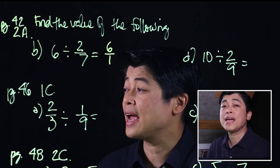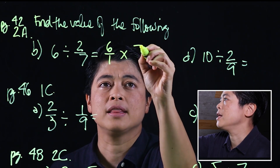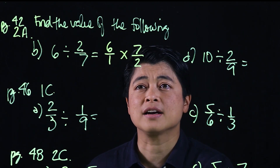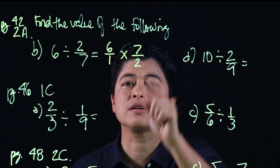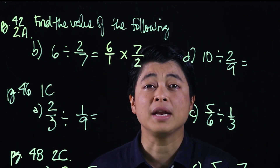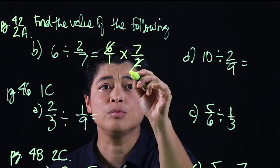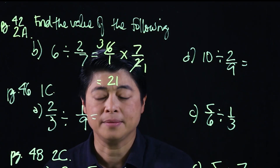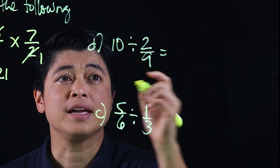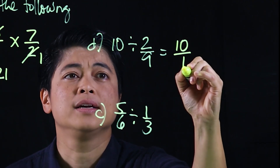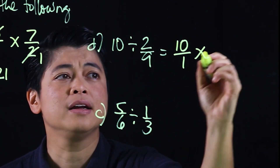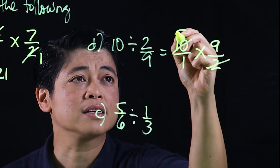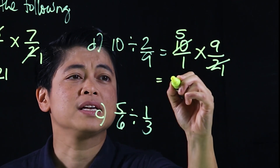Since we can't divide, we change to multiplication and then use 7 over 2. Recall that anything on the numerator should cancel with anything on the denominator. So the 6 and the 2 will cancel — that becomes 3 and 1 — which gives us 21. Similarly, for the next problem, this is 10 over 1. Since we can't divide, we change to multiplication and take the reciprocal. The 10 and 2 cancel as 5 and 1, which makes it 45.